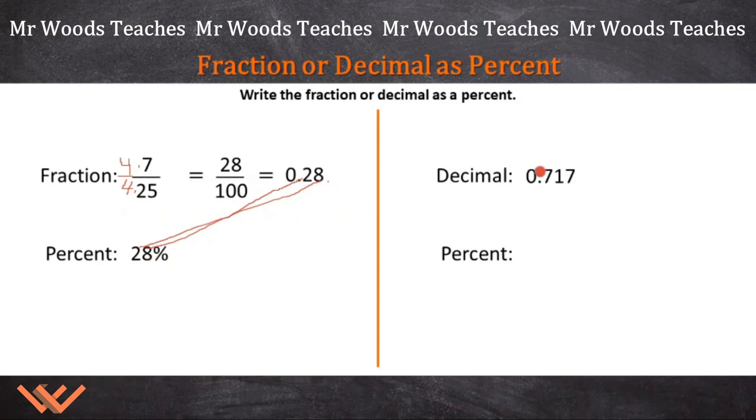But wait, look at this. Shouldn't this be really easy? Yes, you should just be able to go one, two, and say that's 71.7%. Now, is that correct?